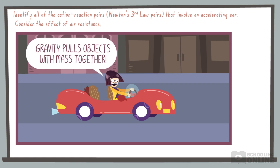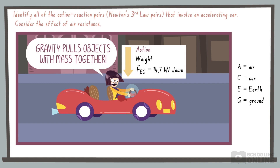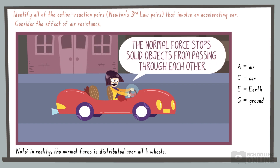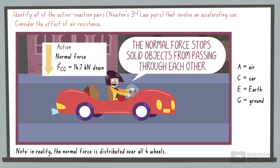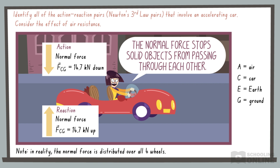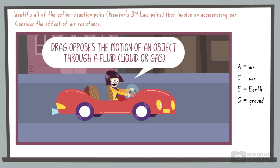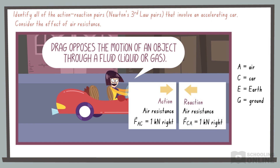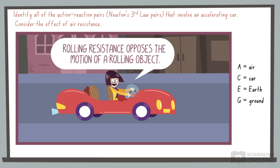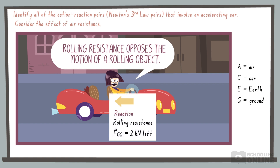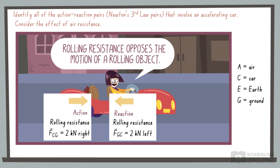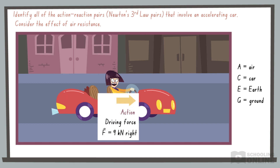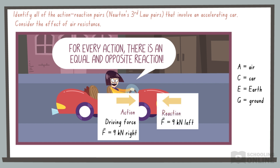Firstly, weight is the attraction between two masses. The Earth pulls the car down, and the car pulls the Earth up. Secondly, the normal force stops solid objects from passing through each other: the car pushes down against the road, and the road pushes up against the car. Drag occurs when an object moves through a liquid or gas: the car pushes the air in front of it, and the air pushes back against the car. Rolling resistance: the ground pushes the car left to slow it down, while the car pushes the ground right. Finally, a driving force allows the car to accelerate right. By Newton's third law, there is a reaction force that points left.